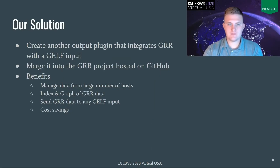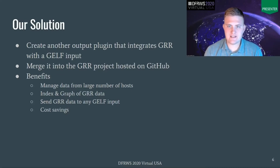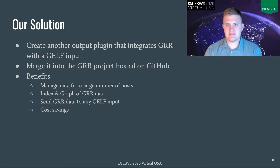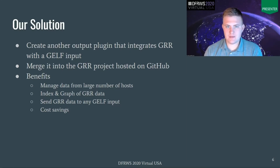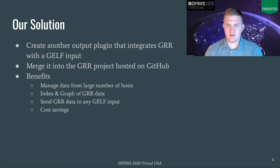Our solution is to create another output plugin that integrates GRR with a GELF input. This output plugin is going to take data returned back from GRR clients, format it to meet the GELF spec, and then send it off to a remote host configured in a config file for GRR. Also, we plan to merge our code into the GRR codebase hosted on GitHub, so anyone is free to use it. The benefit of this plugin, especially compared to not using a plugin at all, is that you are now able to manage data from a large number of hosts — think about that example where a thousand servers are reporting back data to the master.